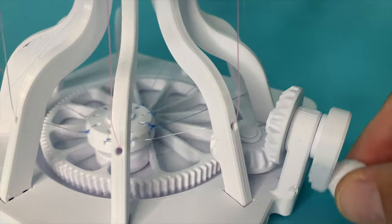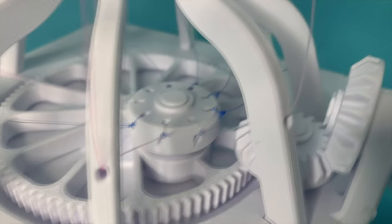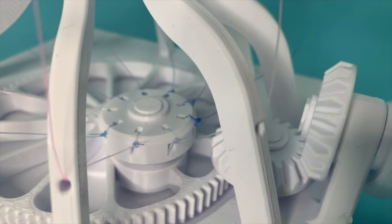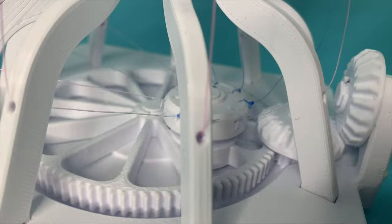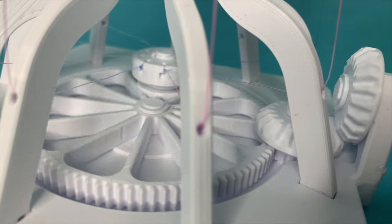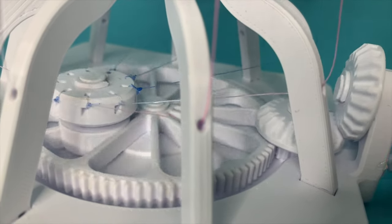As you turn the crank, the motion is transmitted through the gear system to this circle where all the fishing line is tied to. This string mount rotates around the circle, pulling and releasing the strings in a cyclical motion.